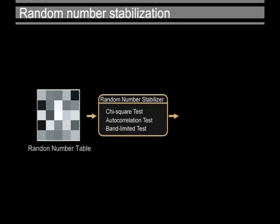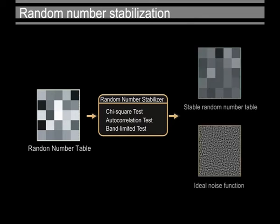To generate the stable random number table, we select three tests for the numerical measuring of the stable property. By using these three tools, we design the optimization problem to generate the ideal noise function.